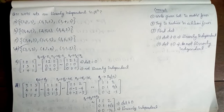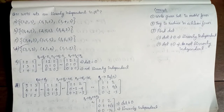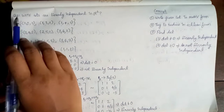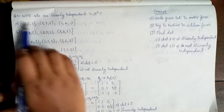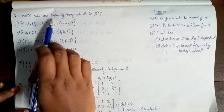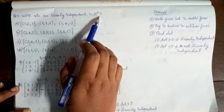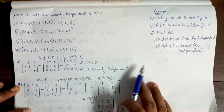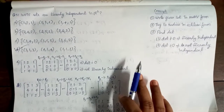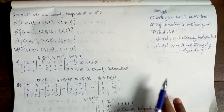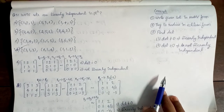Hi everyone, welcome to One-Step Mathematical Solution. In the NBCO 2012 question paper, Question 51: which of the following sets are linearly independent in R3? The set will be linearly independent in R3.